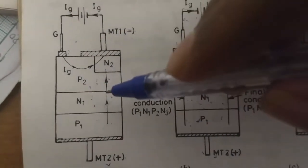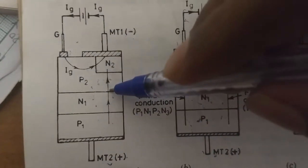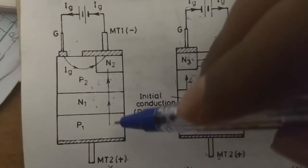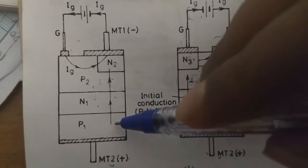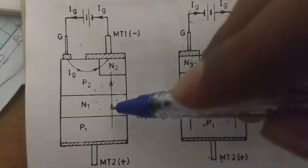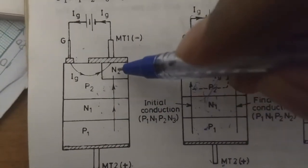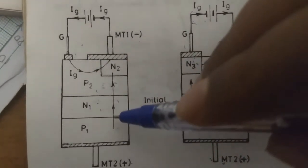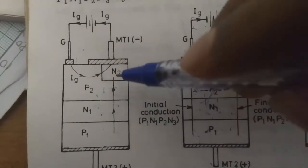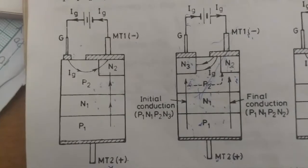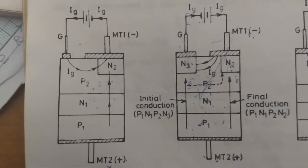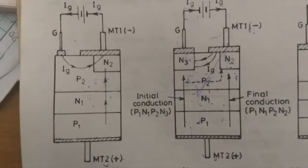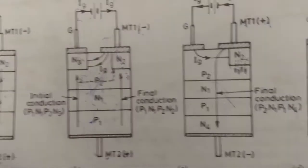This concentration of charge carriers will lead to the breakdown of the reverse biased N1-P2 junction. As this breakdown happens, the current will start to flow in the path P1, N1, P2, and N2. So the final conduction path is P1, N1, P2, N2. This is the first mode of the turn-on process.